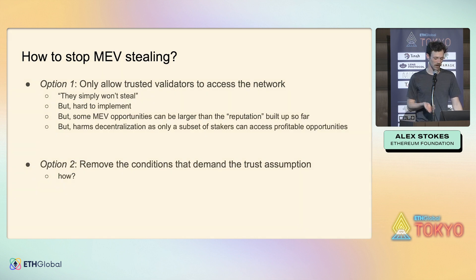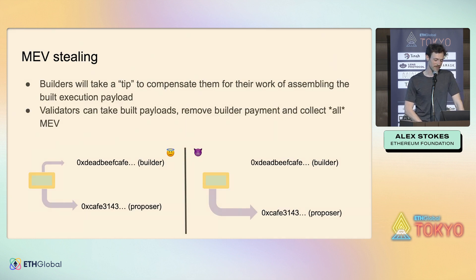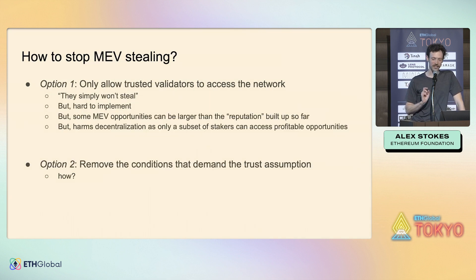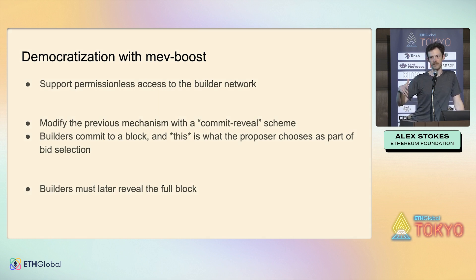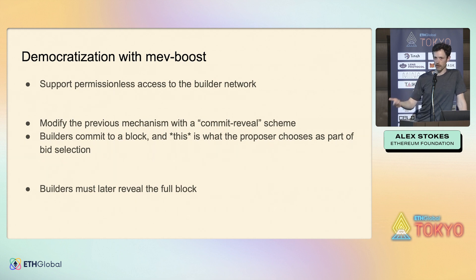So how do we fix this stealing problem? At a high level you either only let trusted actors who promise they'll never steal — but that's like a whitelist — or you change the mechanism so that they simply can't do the attack in the first place. That's essentially what MEV Boost does: it adds an additional round of communication with a commit-reveal game. As a builder I send over a commitment to the block. The proposer has to accept it in a binding fashion before I reveal the whole block.